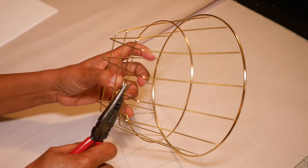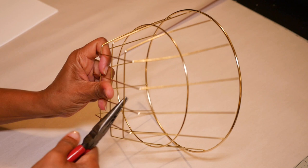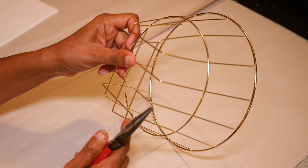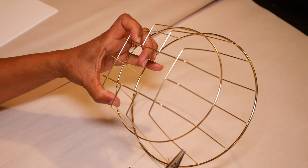I am using my long nose pliers for this and what I'm going to do is just sort of wiggle back and forth gently until the wire snaps. It will break right at the point where I have the pliers, so I'm just going to go around and open up that rectangle that's at the bottom of this basket.